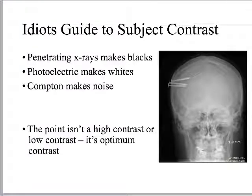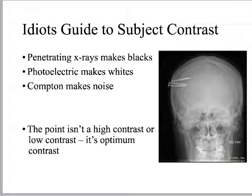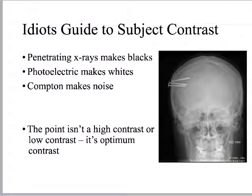So here's my idiot's guide to subject contrast — breaking down the world of x-ray to the simplest terms. Penetrating x-rays makes the image black. Photoelectric makes stuff white. Compton makes noise. The point isn't high contrast or low contrast — it's optimum contrast. Do I have sufficient contrast to see what I need to see in this image? That's the question.